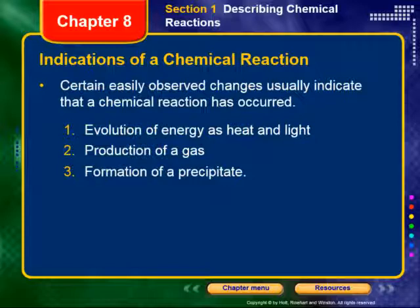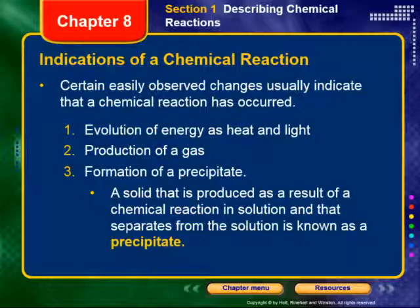The second indicator of a chemical reaction is the production of a gas — also called evolution of gas or evolution of bubbles — something going from a solid or liquid state to the gaseous state. That, in and of itself, is not a chemical reaction, but it can indicate one is happening. Lastly, the formation of a precipitate: a solid produced as a result of a chemical reaction in solution, separating out from the solution. Color change is also mentioned but lumped into indicator one in our book, so we're looking at three total.